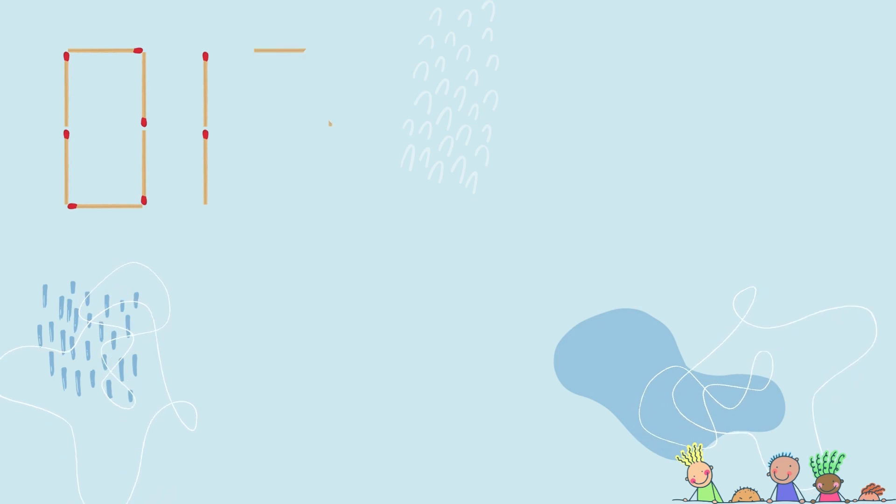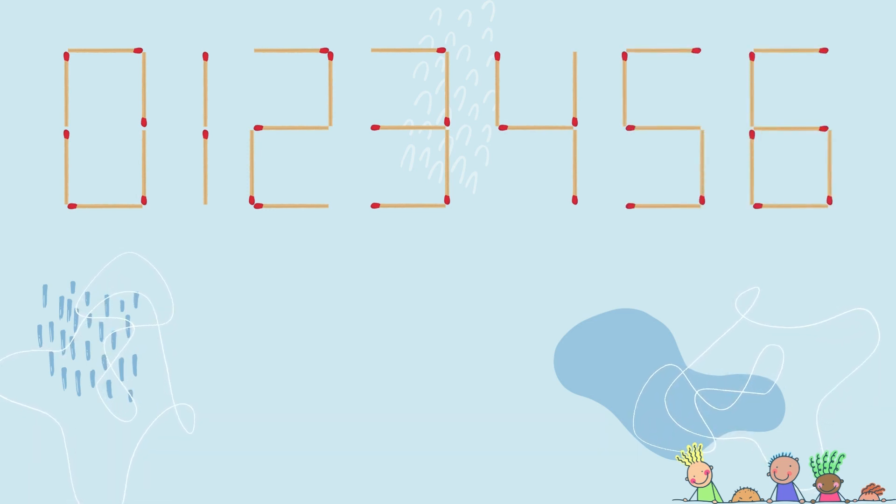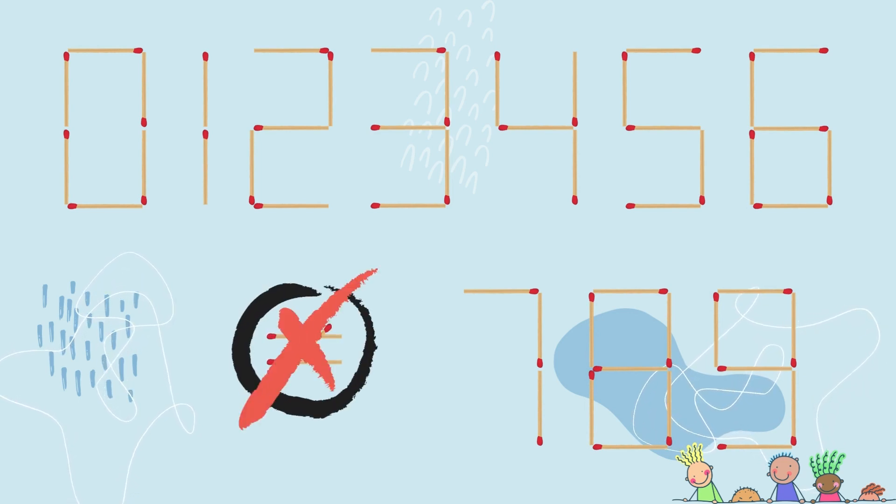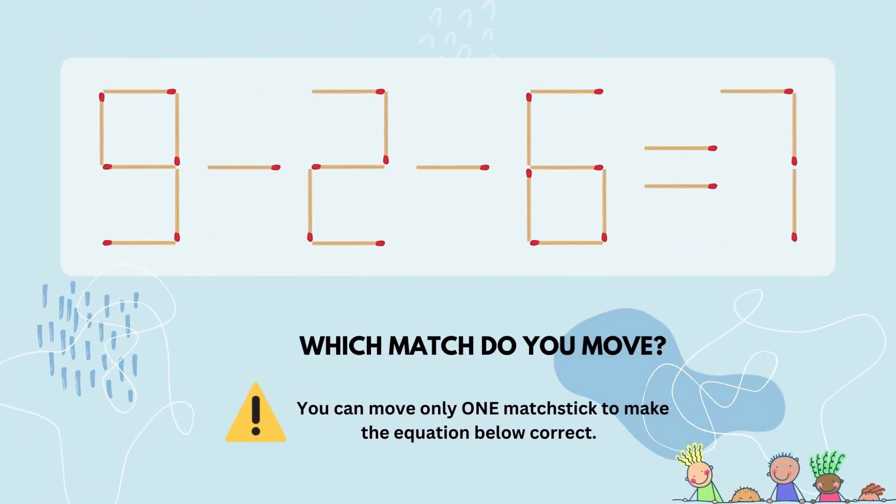A few basic rules. To make things universal, the numbers made by the matchsticks must look like the ones you see on the screen. And putting a match across the equal sign does not count. One last look at the equation. Do you know the answer yet?